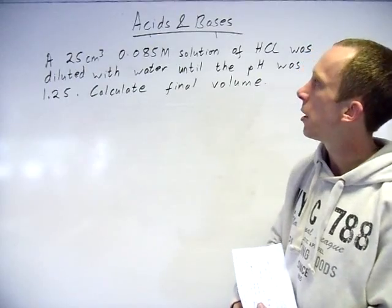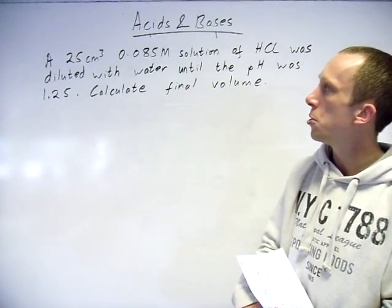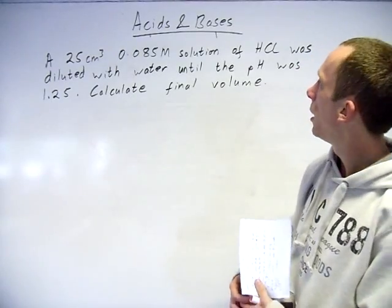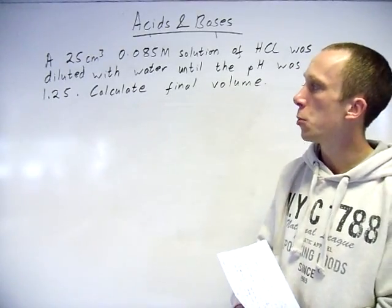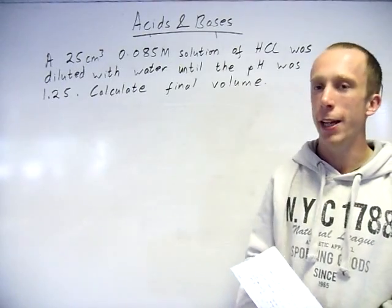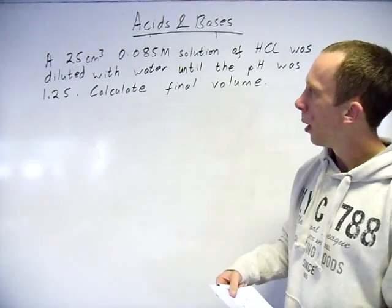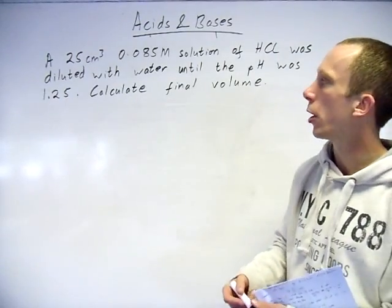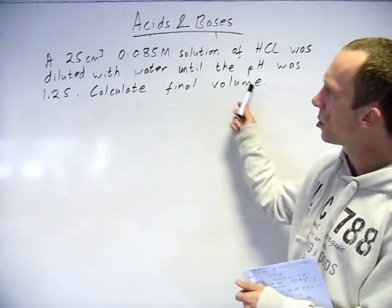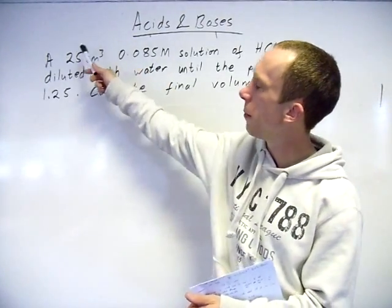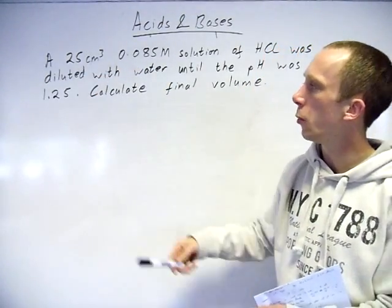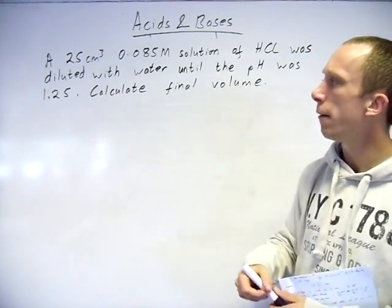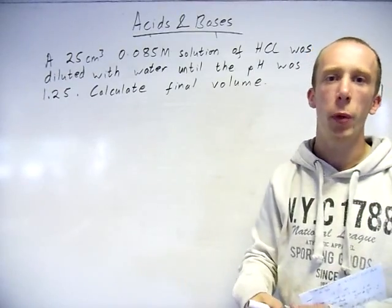It's from the June 2012 paper for Chem 4 if you want to look at it. A 25 cubic centimeter sample of 0.085 molar solution of HCl was diluted with water until the pH was 1.25. Calculate the final volume. Where do we start with that? Because you're going to be using a few different equations. Calculate the final volume - what's the normal way you work out volume?